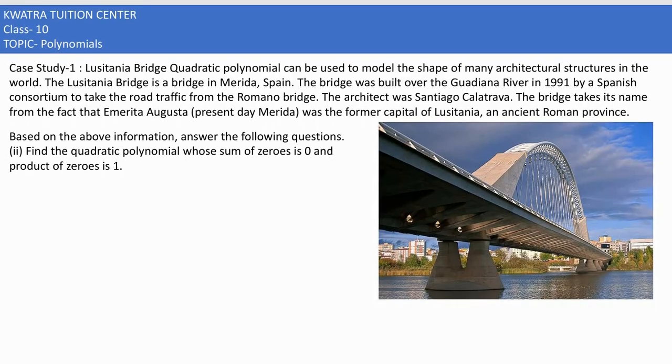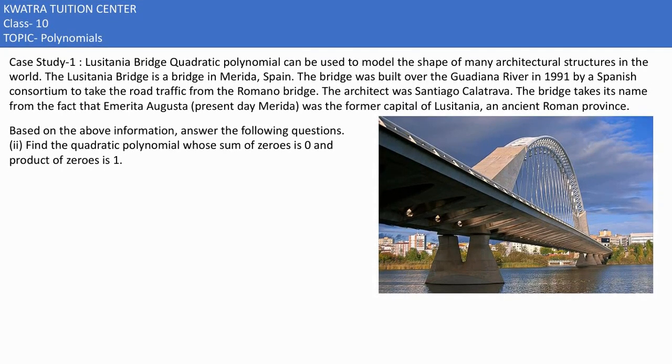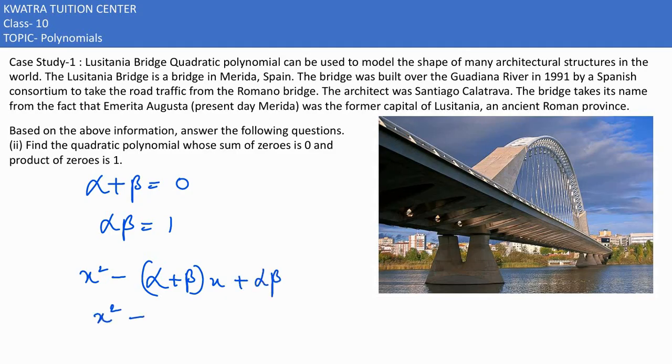They are saying find the quadratic polynomial whose sum of zeros is 0 and product of zeros is 1. α + β is equal to 0 and product is equal to 1. A quadratic polynomial creates x² - (α + β)x + αβ. α + β is 0, αβ is 1, so you would have x² + 1.